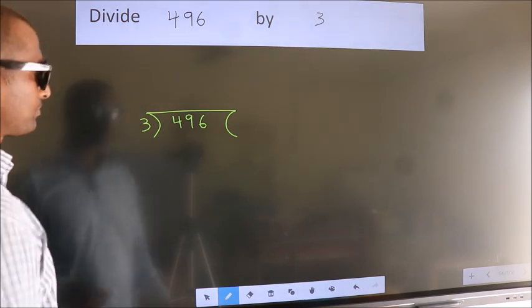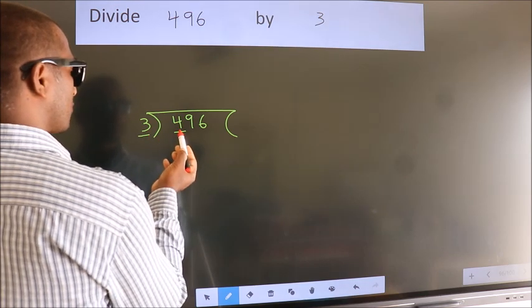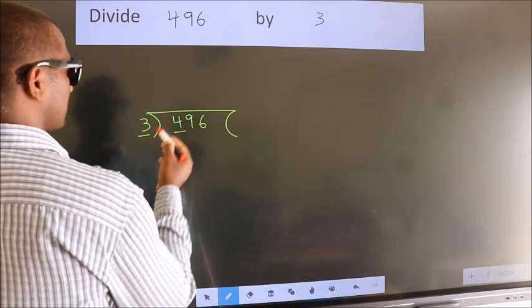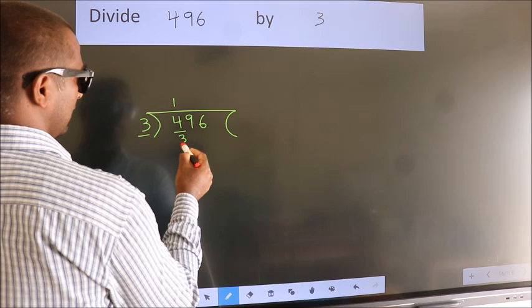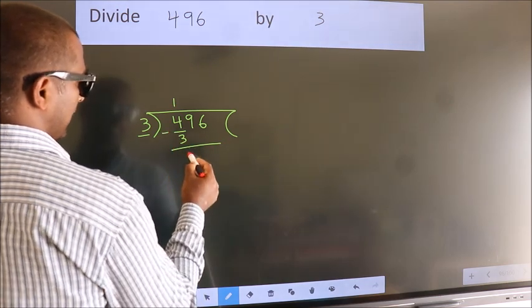Next. Here we have 4, here 3. A number close to 4 in the 3 table is 3 once 3. Now we should subtract. We get 1.